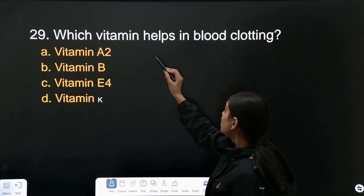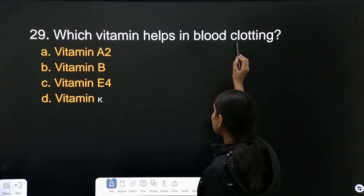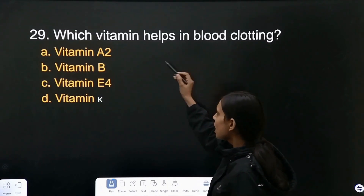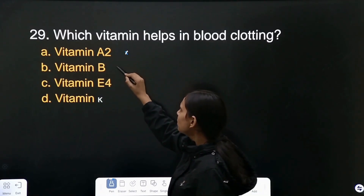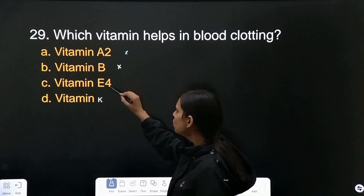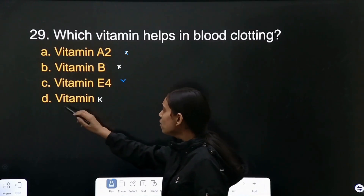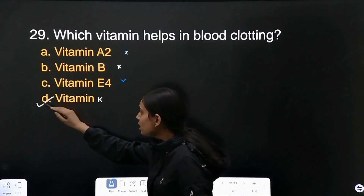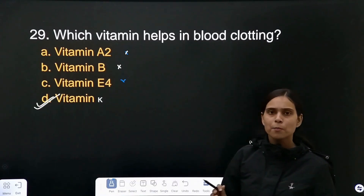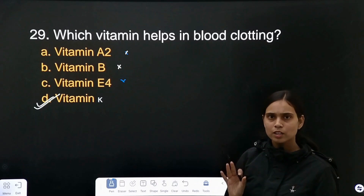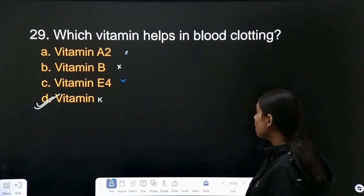Question number 29: which vitamin helps in blood clotting? Vitamin A — no. Vitamin B — no. Vitamin E — no. Vitamin K helps in blood clotting.